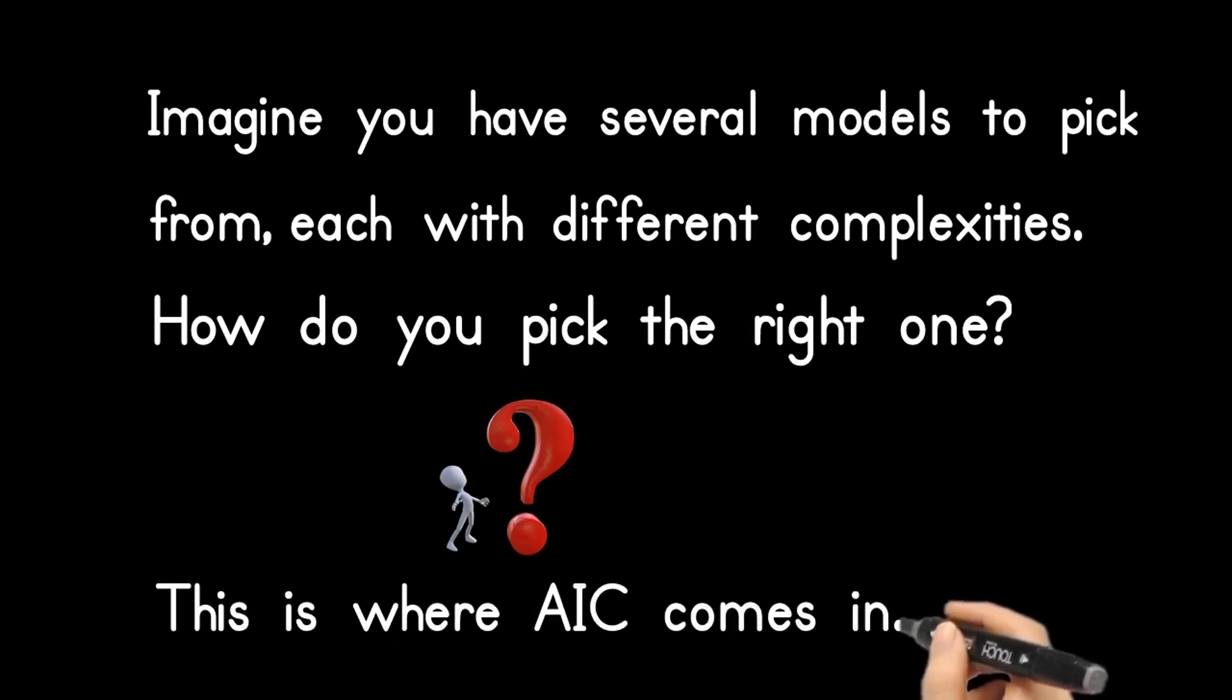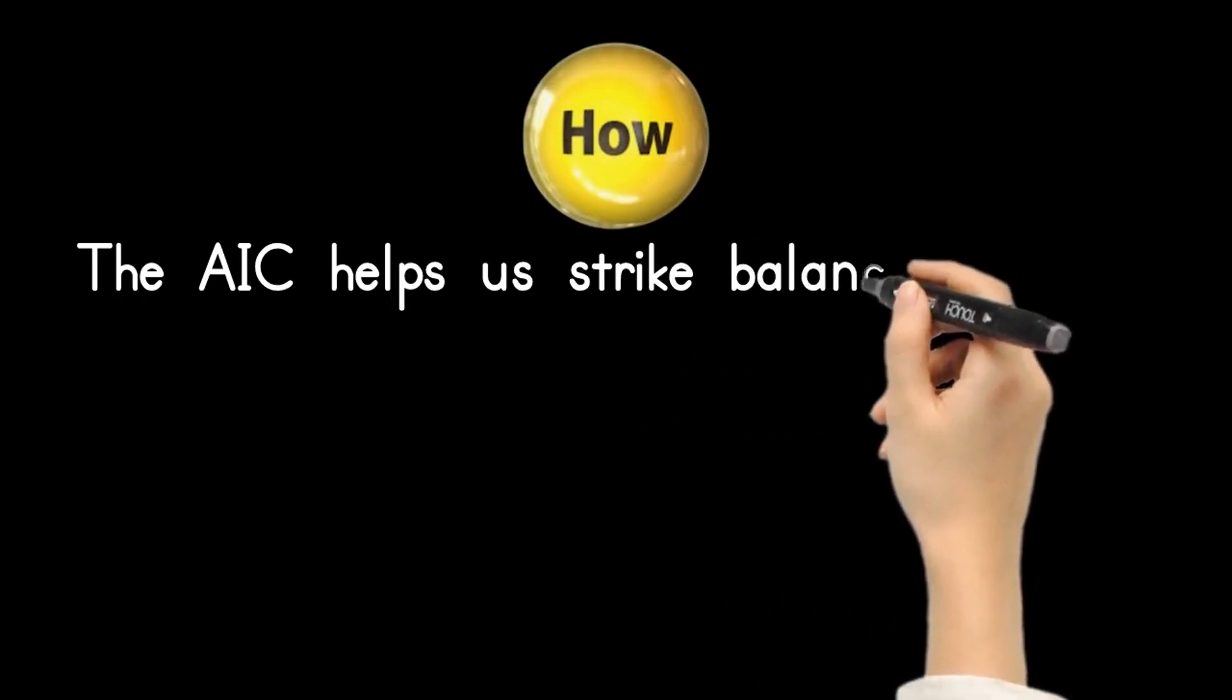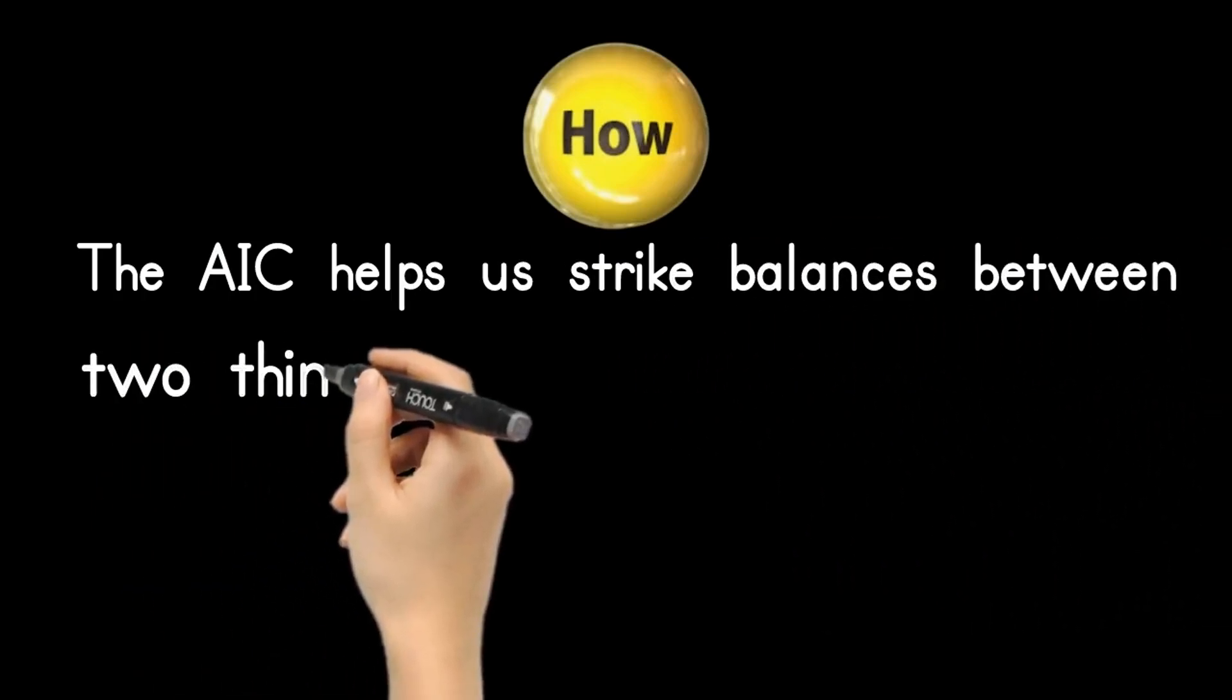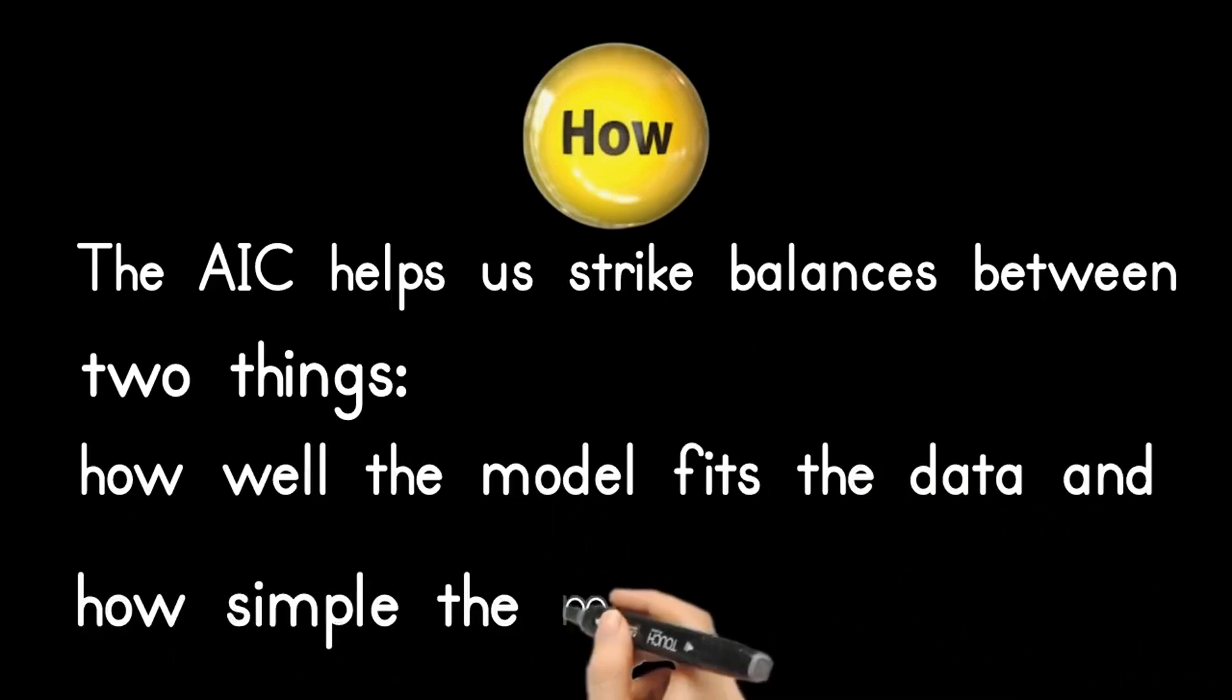This is where AIC comes in. The AIC helps us strike balances between two things: how well the model fits the data and how simple the model is.